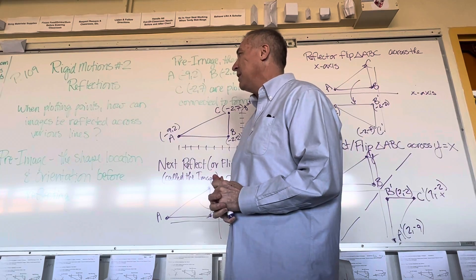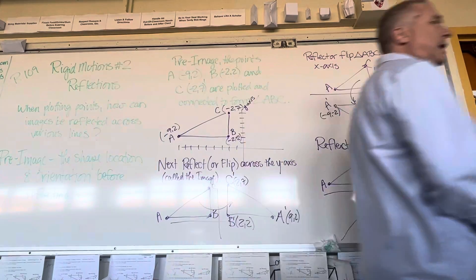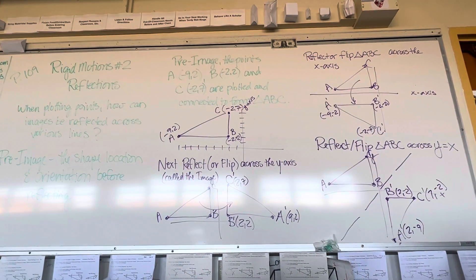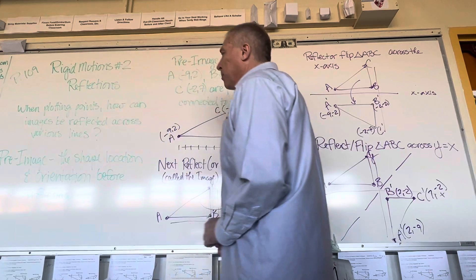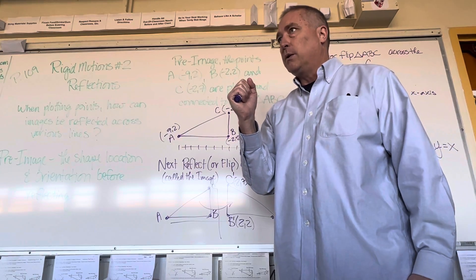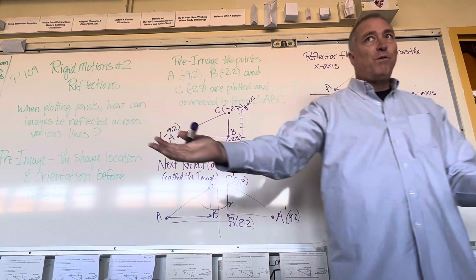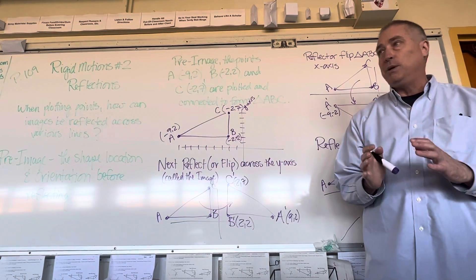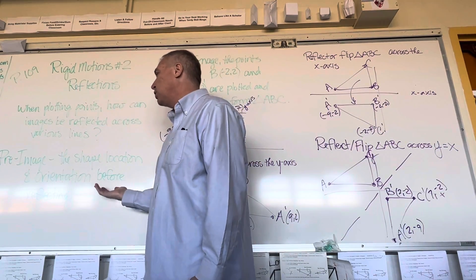When plotting points, how can images be reflected across various lines? I'm going to need some prop paper. We'll do that, and I'll have you guys do an activity later where we can fold paper and you can do these too. Pre-image. Everybody say pre-image. When you hear image, you have something in your mind, and then you put a pre on it. What does pre mean? Like before. Before, like before the image. The word in this case actually means what it is. The pre-image is the shape, location, and orientation before location.